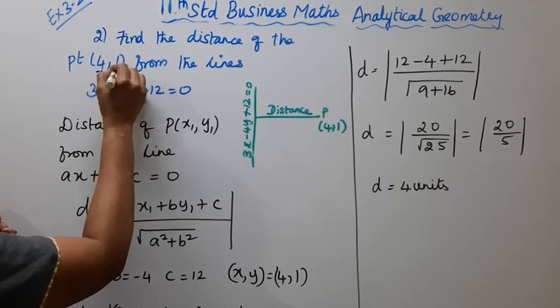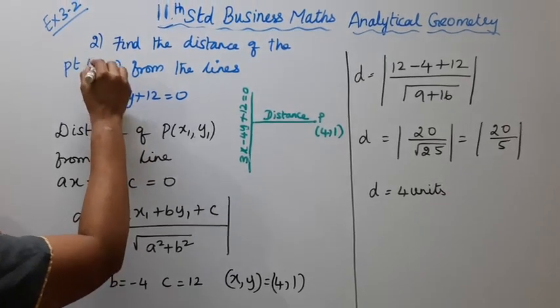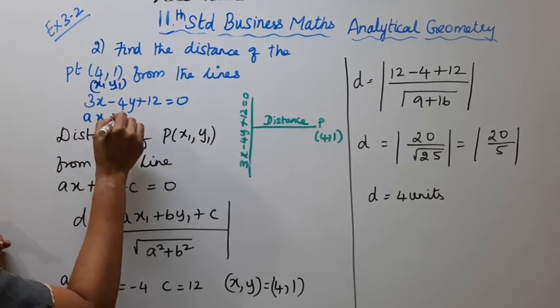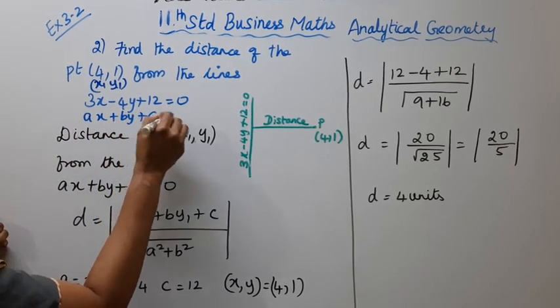This is x1, this is y1. x1 is 4, y1 is 1. This is ax plus by plus c equal to 0.